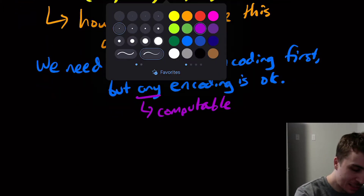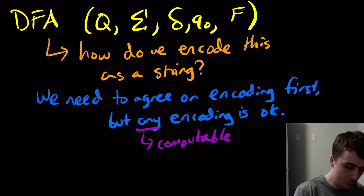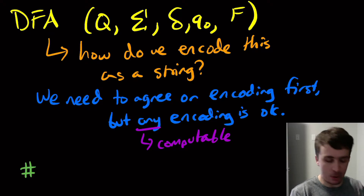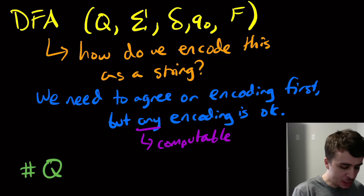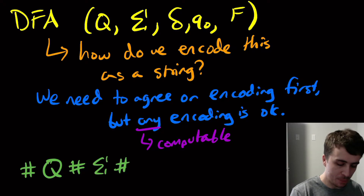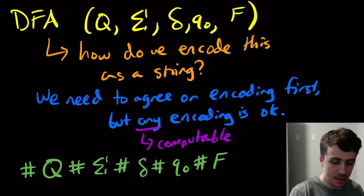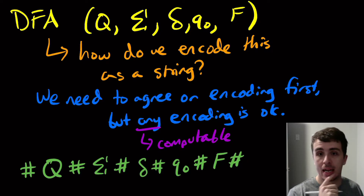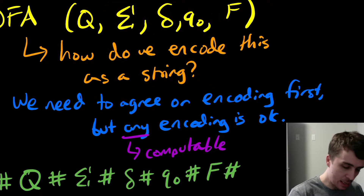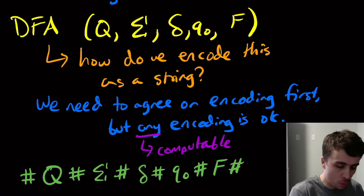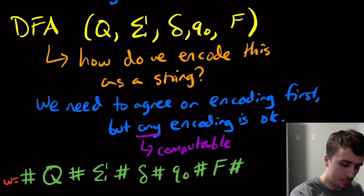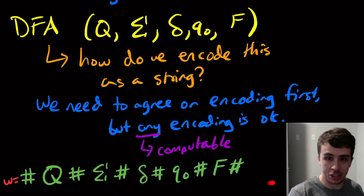As an example, what could we do? We can use a pound sign as a new character. We list all the states out in a list, then pound sign, all the characters out, pound sign, delta, pound sign, what the start state is, pound sign, and all the final states listed there. So the pound sign is a delimiter. The input to whatever we're going to use is going to be that string — so W is going to be this big overall string.